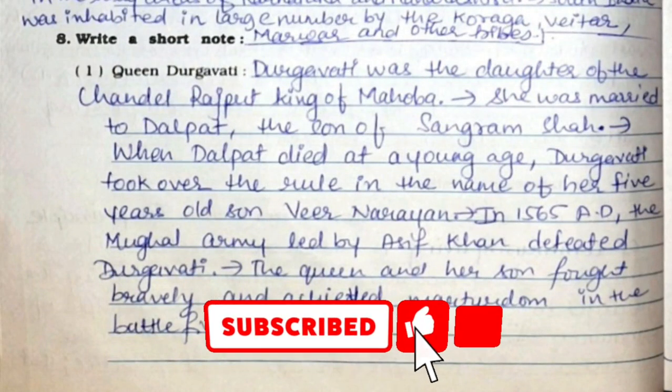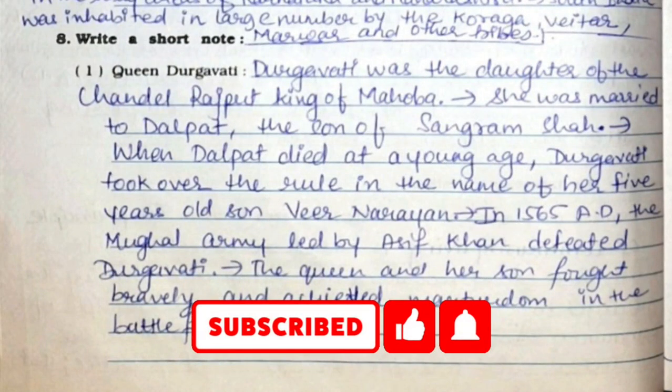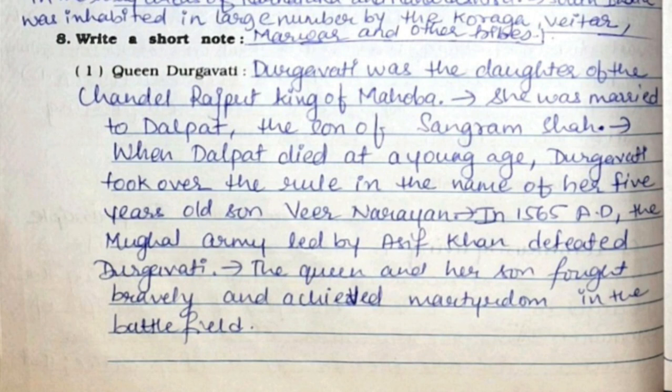Now we'll continue with Question 8, Write a Short Note. First: Queen Durgavati. Durgavati was the daughter of the Chandel Rajput king of Mahoba; she was married to Dalpat, the son of Sangram Shah. When Dalpat died at a young age, Durgavati took over the rule in the name of her five-year-old son Veer Narayan. In 1565 AD, the Mughal army led by Asif Khan defeated Durgavati. The queen and her son fought bravely and achieved martyrdom in the battlefield.